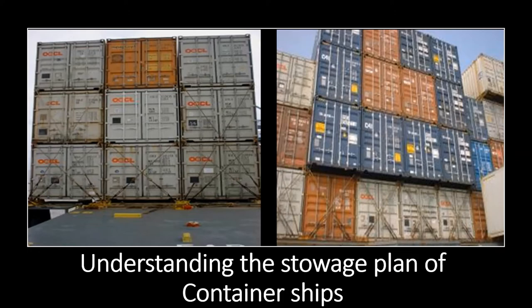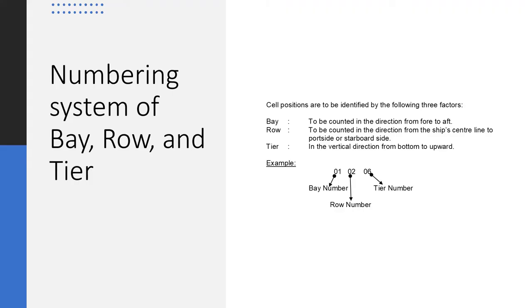I've sailed mostly on container ships, so I like to assume I know a little bit about them. Let me know at the end of the video if you have any further questions or concerns. We'll start with the numbering system used on container ships — the storage system is based on what is called the bay, row, and tier system.